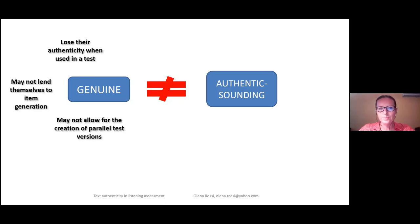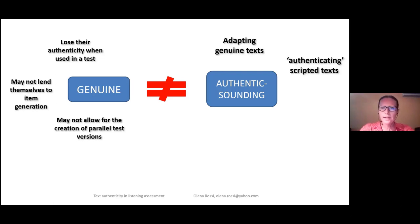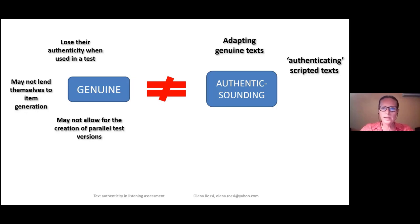So how can such authentic-sounding texts be produced? In the literature, four techniques have been described. The first technique is adapting genuine text: item writers choose genuine sound files, transcribe them, and then adjust or 'doctor' them to make them fit the specifications. Another technique is authenticating scripted text. We know that listening input texts are often scripted — item writers just sit down and write such a text. Wagner suggested a way to make them sound more authentic, calling it 'authentication': taking the script and filling it with spoken language features like pauses, hesitations, and back-channeling. Another way is semi-scripting, first suggested by Bach — creating content points and then asking voice actors to speak from those content points without reading the actual text, so the words are theirs but the content has been given to them.